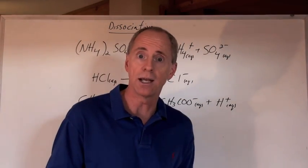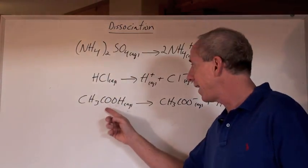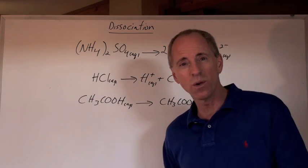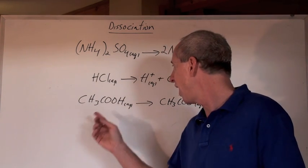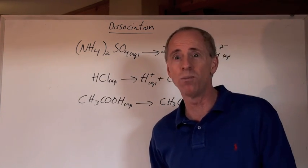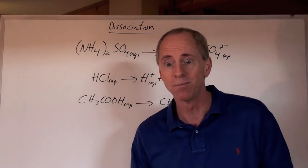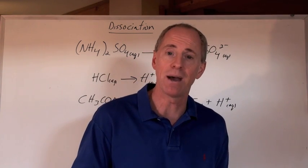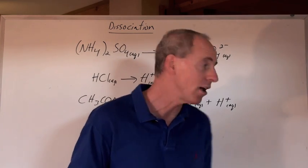Now, acetic acid actually, in a 0.1 mol per liter solution, gives up its H positive about 1.3% of the time. Yeah. So in a thousand molecules, about 13 of them actually break down into their ions.